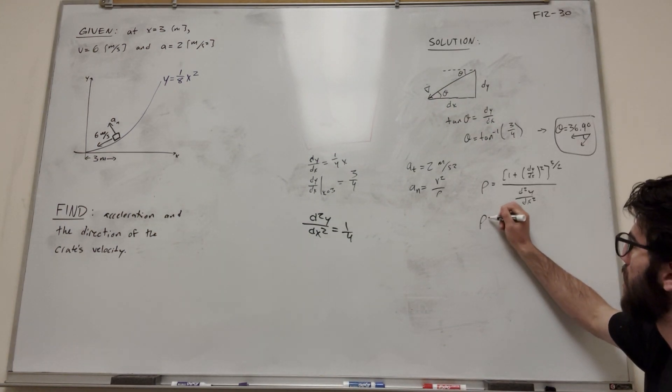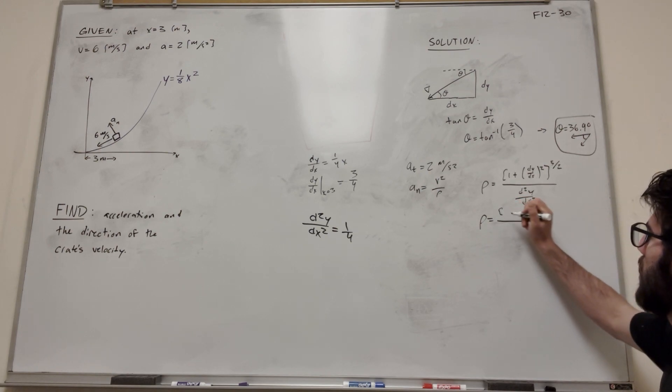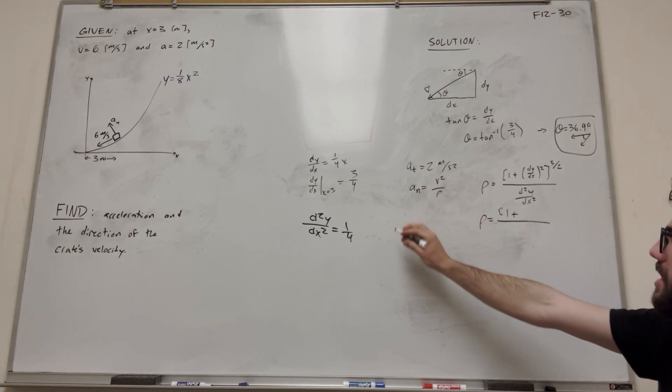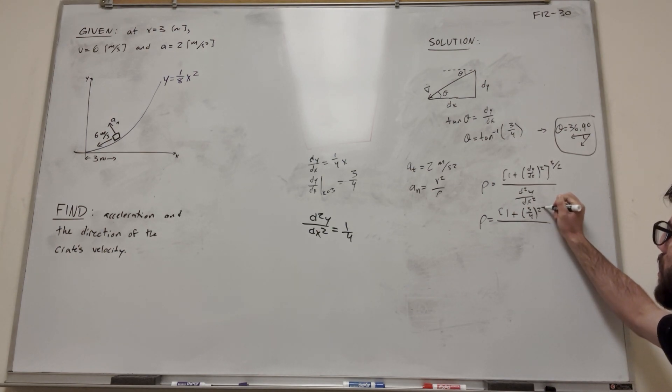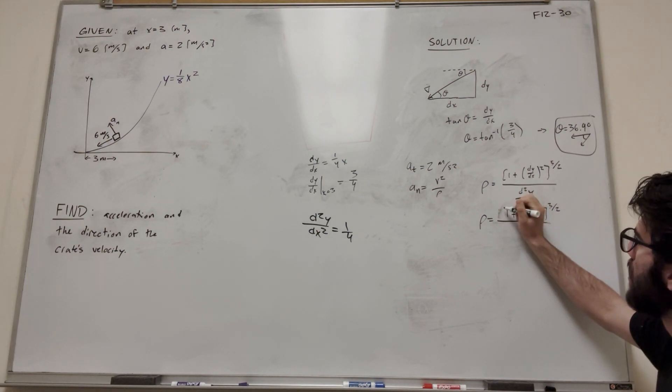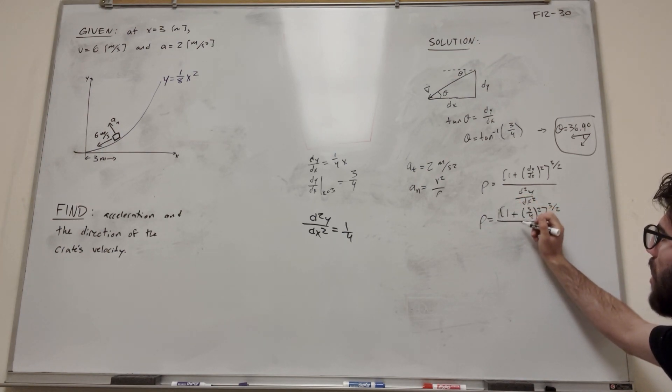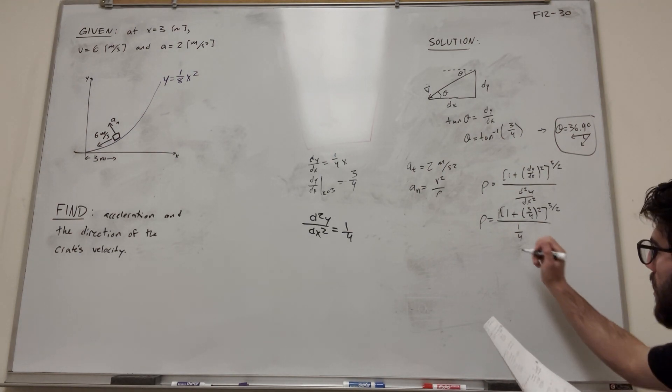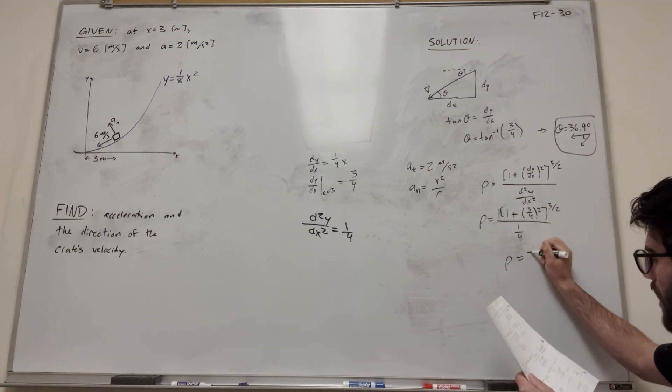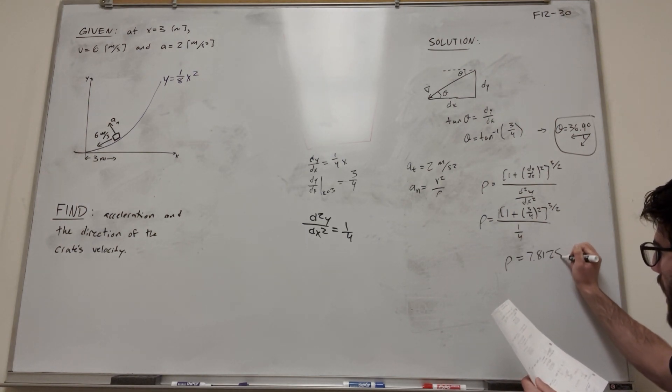Let's plug that in. So the numerator is going to be 1 plus, and we said it's 3 fourths, so 3 fourths squared, all of that to the 3 halves. And now in the denominator, we want it to be 4. So when we do the math on this, you get that rho is equal to 7.8125 meters.